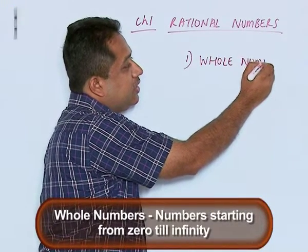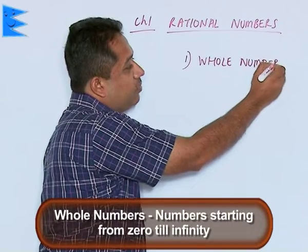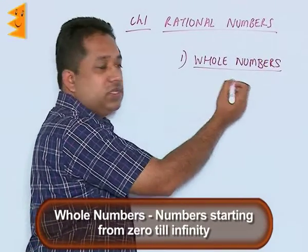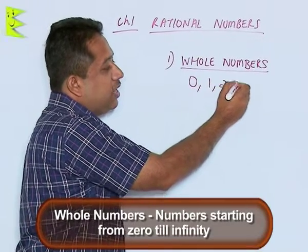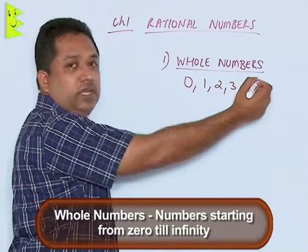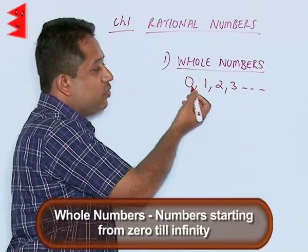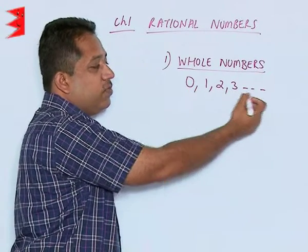Whole numbers are numbers which start from 0, so here we have a series of numbers starting from 0, goes on to 1, 2, 3, and up to infinity. Infinity means it is never ending, so we have 0, 1, followed by n numbers up to infinity.